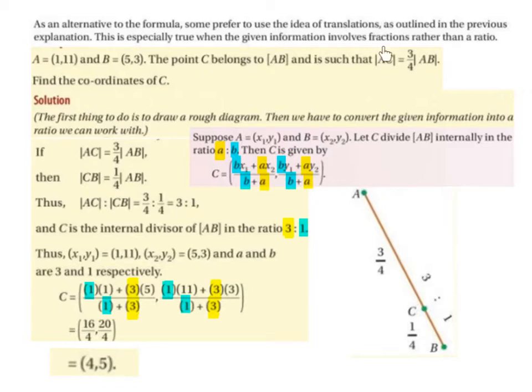We are told that C is a point along AB, such that from A to C is 3/4 of AB. So what we are going to do is separate our line into 4 sections. So I have roughly 1, 2, 3, 4 sections.